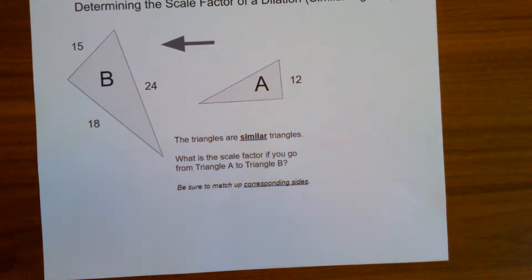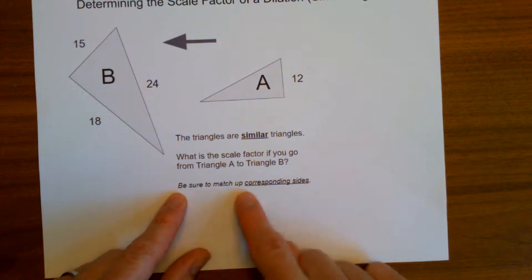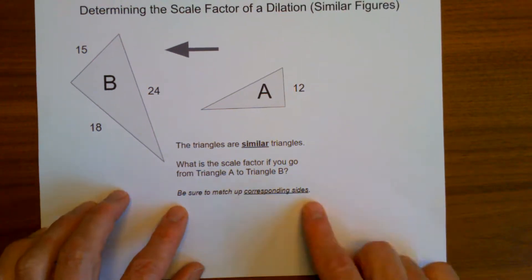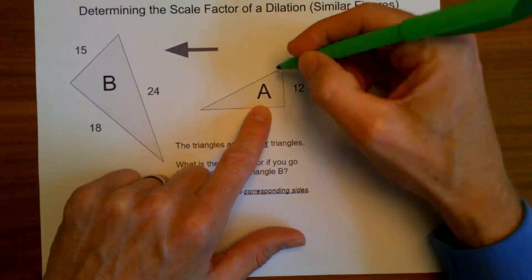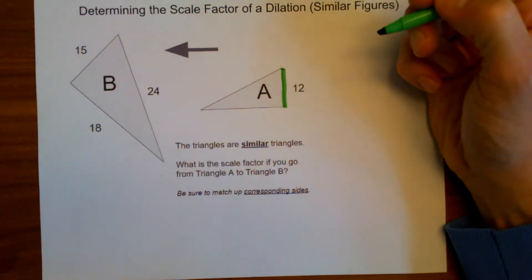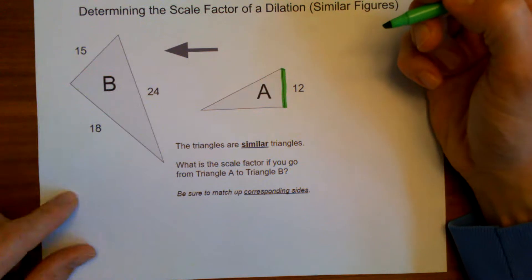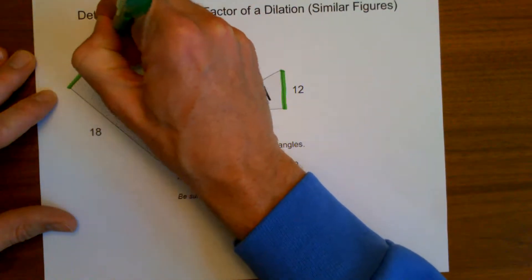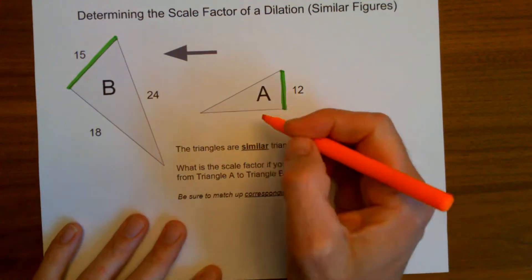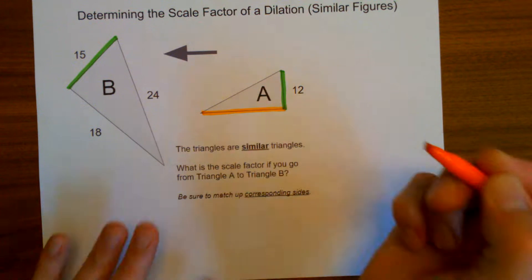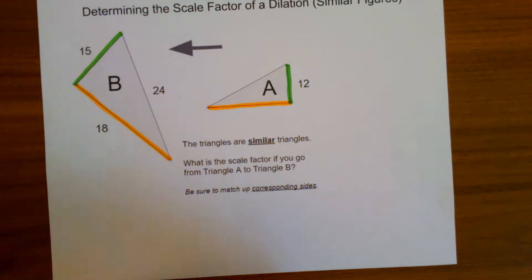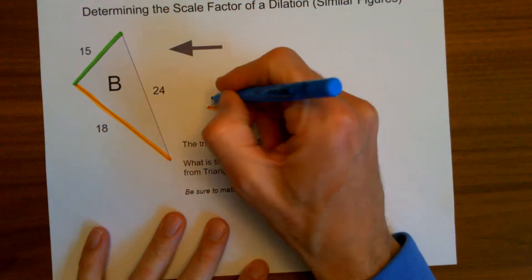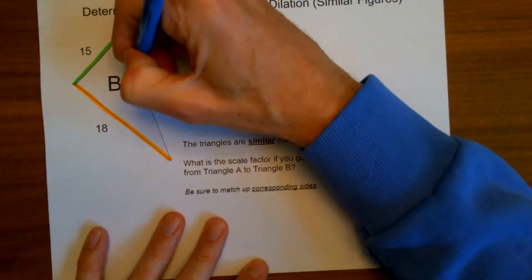Before you start to calculate, don't grab a calculator yet — slow down and think. The problem gives you helpful advice: be sure to match up the corresponding sides. Corresponding sides are the sides that match up with one another. In triangle A, I can see this side is the shortest of the three sides, so I need to match that up with the shortest side in triangle B, which is 15. The medium side length in triangle A matches up with the medium side length in triangle B, and the longest side matches up with the longest side.